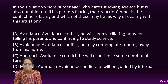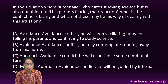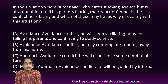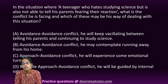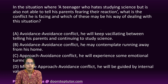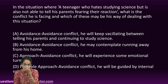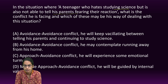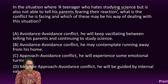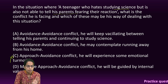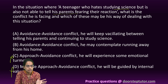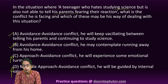Here is an interesting situation: a teenager hates to study science but is not able to tell the parents, fearing their reaction. This is an avoidance-avoidance situation because the student does not want to study science and also does not want to tell the parents. So it cannot be approach-avoidance or multiple approach-avoidance — only avoidance-avoidance is correct.